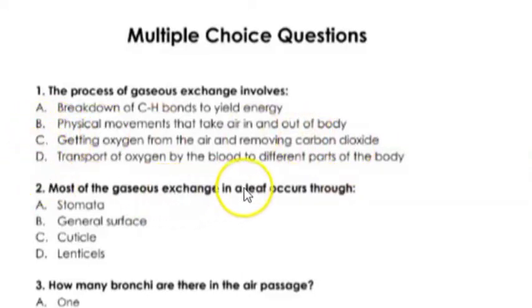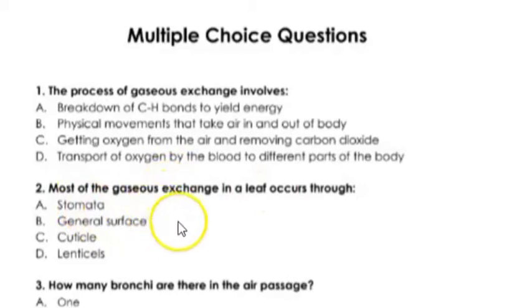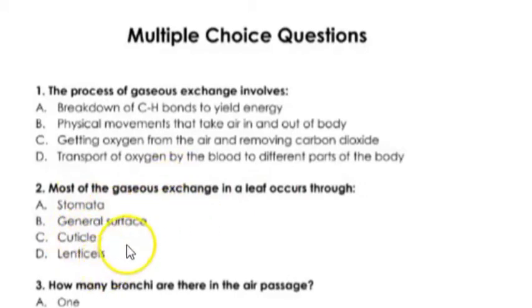Most of the gaseous exchange in a leaf occurs through stomata. The options are: stomata, general surface, cuticle, or lenticels.